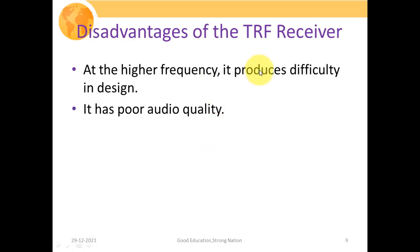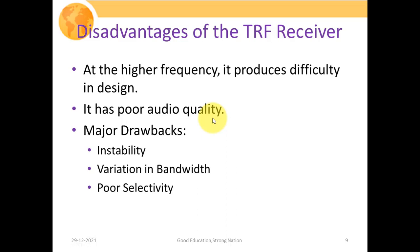Now we discuss the disadvantages of the TRF receiver. At higher frequencies, it is difficult to design. It also has poor audio quality, because the gain of the RF amplifiers used in the TRF receiver is not uniform — it is varying. As the frequency increases, the response of the RF amplifier is not fixed but variable, which results in distorted signal reception and poor audio quality. The major drawbacks are instability, variation in bandwidth, and poor selectivity.